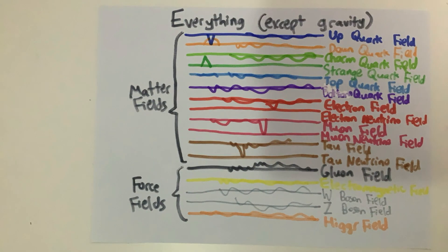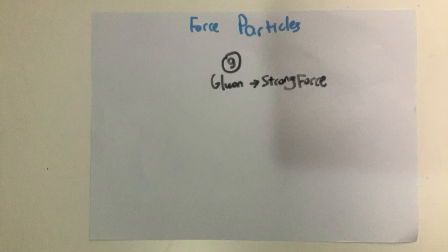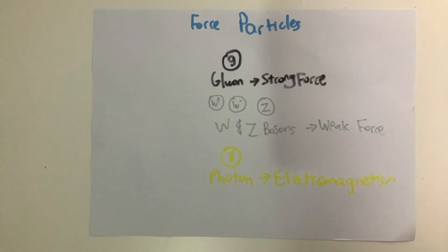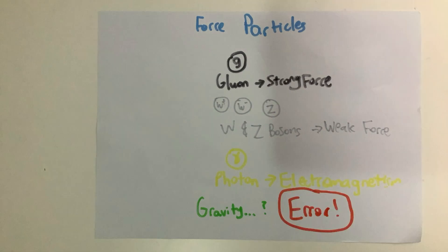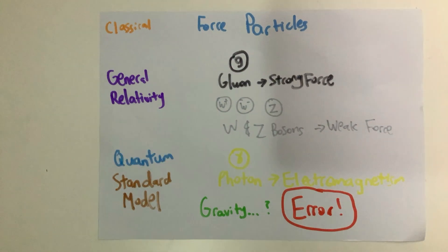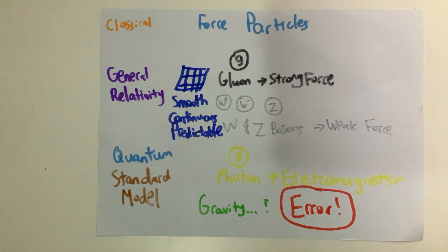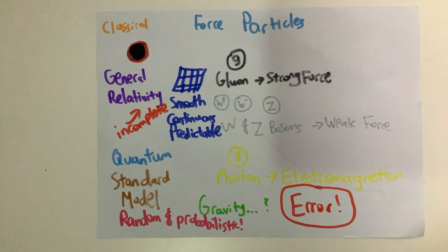Let's return to the standard model's force-carrying particles. The gluon is the particle related to the strong force, the W and Z bosons to the weak nuclear force, and the photon to the electromagnetic force. So why is there no particle or field associated with gravity? The answer is that gravity is simply incompatible with quantum physics. Remember, general relativity is a classical theory, while the standard model is a quantum mechanical one. The main problem with quantizing general relativity is that it describes a smooth, continuous, and predictable view of reality, while quantum mechanics describes random and probabilistic phenomena. Not to mention, general relativity is incomplete as it is unable to describe extremities such as black holes or the Big Bang.